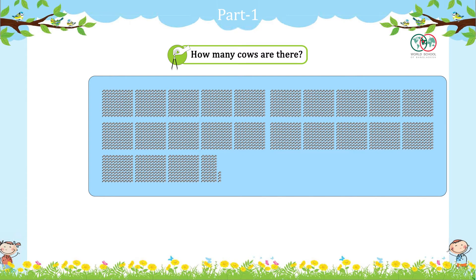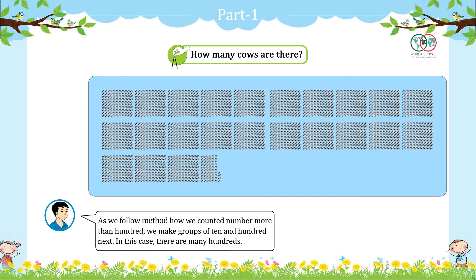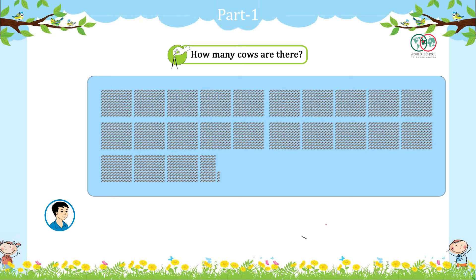First of all, we will be able to get one more than 10, or 10 groups. As we follow the method of how we counted numbers more than 100, we make groups of 10 and 100. In this case, there are many hundreds — more than 10 groups of 100.